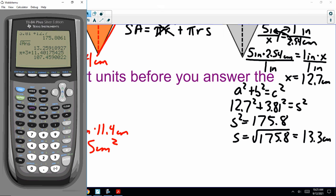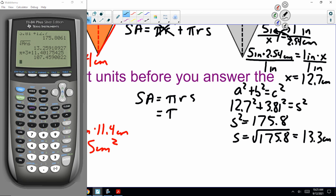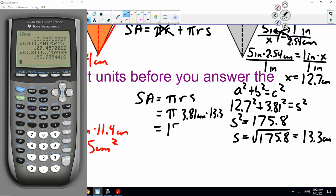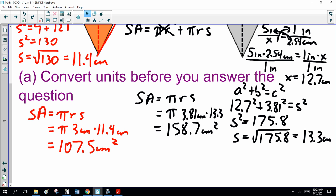Now, the other one. Surface area πrs. π, now my radius was 3.81 centimeters times my slant height, 13.3. Is that right? π times 3.81 times 13.3 is 158.7. Okay. So, which is bigger? The black one. Alright.